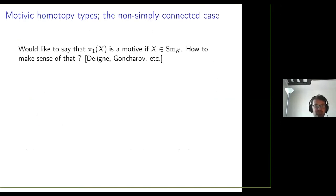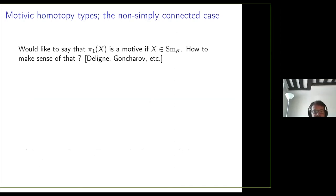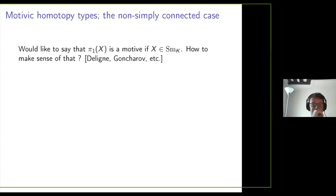In the non-simply connected case I'm not going to do the general theory, but let me give an example. This goes back to work of Deligne and Kontsevich. We'd like to say that if you have an algebraic variety, the fundamental group is a motive, but this doesn't make a lot of sense because the fundamental group is in general non-abelian.